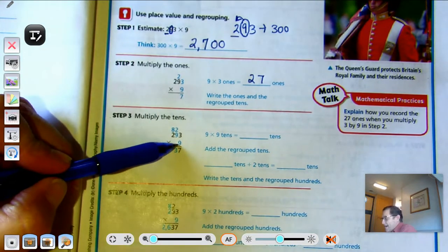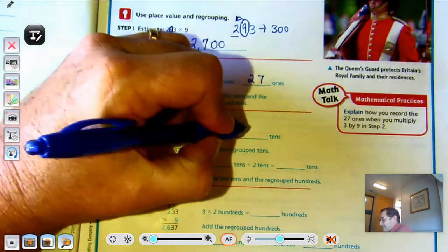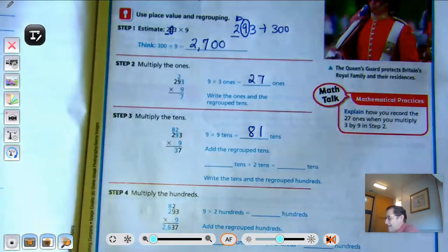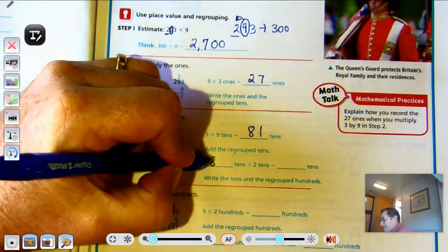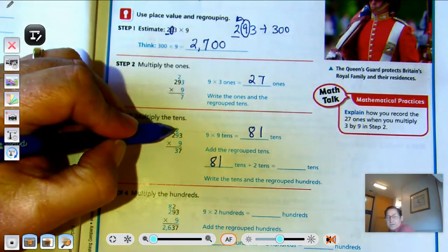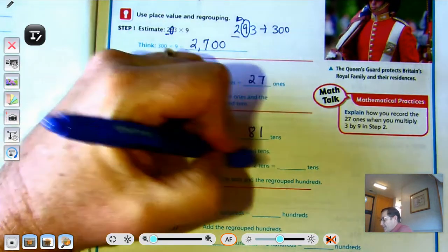And we're going to multiply the tens. Well, right now we have 9 sets of 9 tens. That would give me 81 tens. But we also have 2 regrouped tens, right? Right there, we have 2 regrouped tens.